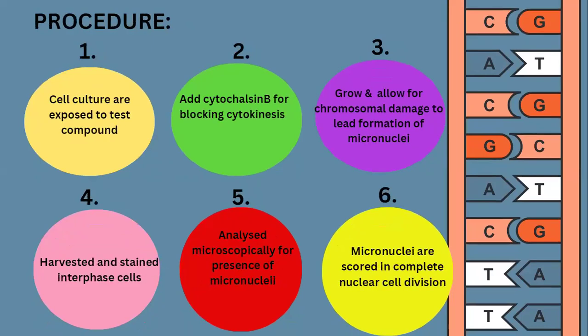To carry out this test, take cells and expose them to the test compound. Cytochalasin B is added to block cytokinesis — the process of cell division. Allow time for chromosomal damage to lead to micronucleus formation. Cells are then harvested and stained with specific DNA reagents or dye agents. Interphase cells are analyzed microscopically for the presence of micronuclei, which are scored for intensity in complete nuclear cell division.